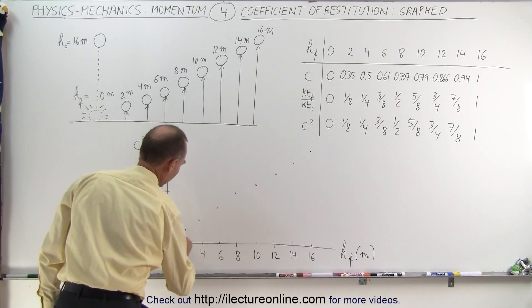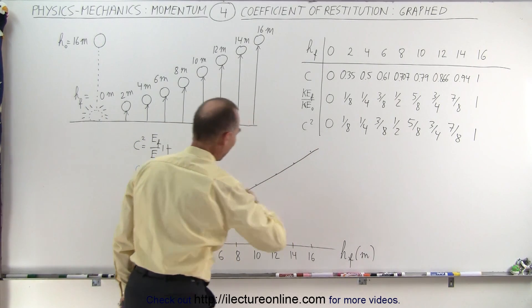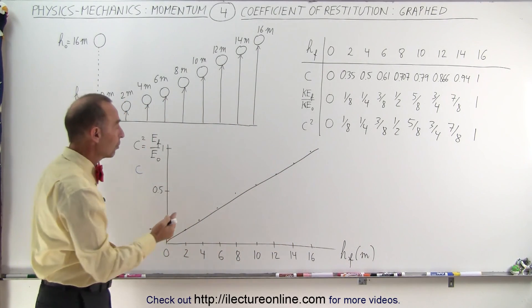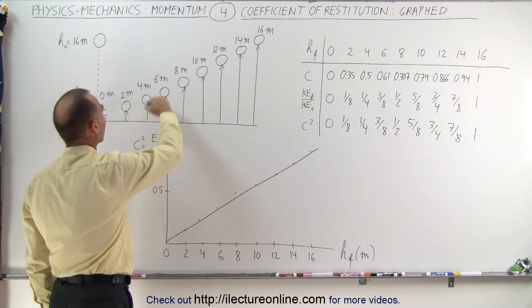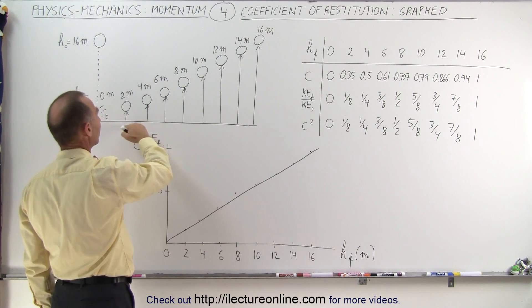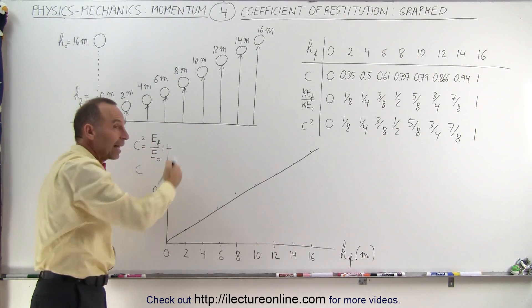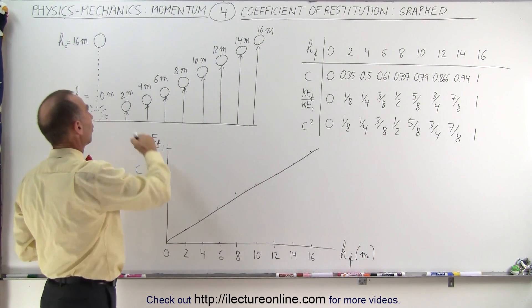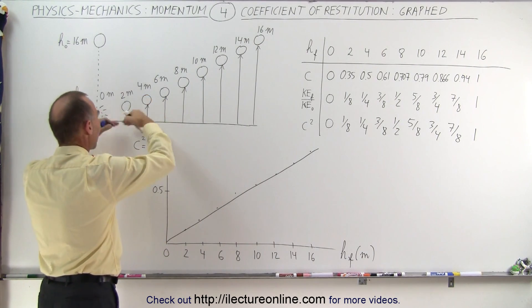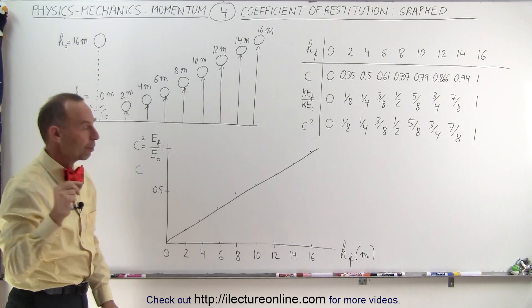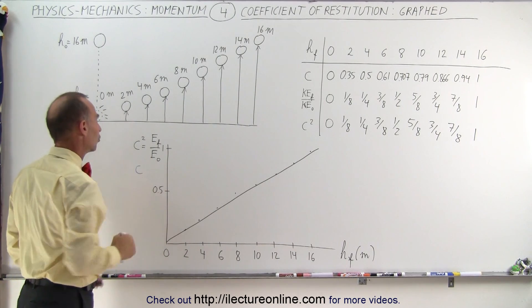Then we connect all the dots. We should get a straight line, a linear relationship between the height that the ball attains. That also will then be related to the energy that it retains, or that's restored back in the object after the collision, which is also proportional to the coefficient of restitution squared.